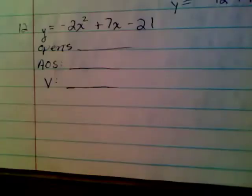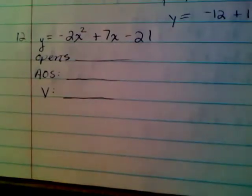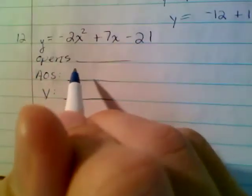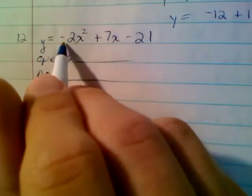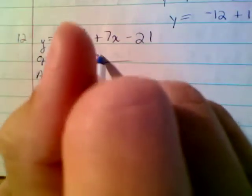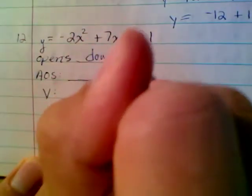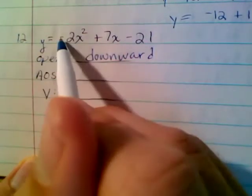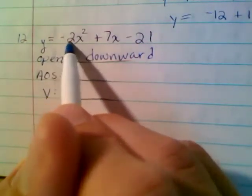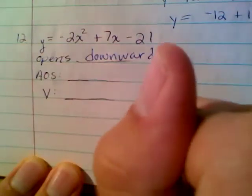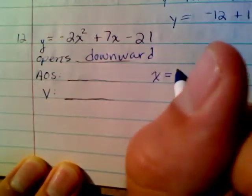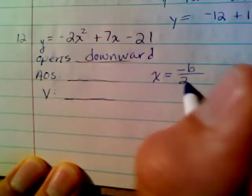All right, hope that worked out. And number 12, instead of writing out the a, b, and c value, I wanted to see if we could do a question where I don't write out a, b, and c. So here it is. This one opens, I bet you can guess, downward. And it's downward because there's a negative 2 out front, there's a negative 2a value. And then the axis of symmetry is found by doing the formula, negative b over 2 times a.